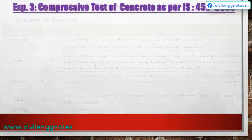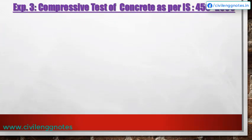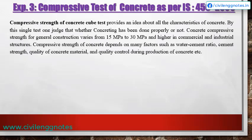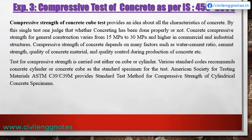Experimental Program 3 — Compressive test of concrete as per IS 456:2000. Compressive strength of concrete cube test provides an idea about all characteristics of concrete. Concrete compressive strength for general construction varies from 15 MPa to 30 MPa, and higher in commercial and industrial structures. Compressive strength depends on factors such as water-cement ratio, cement strength, quality of concrete material, and quality control during production.